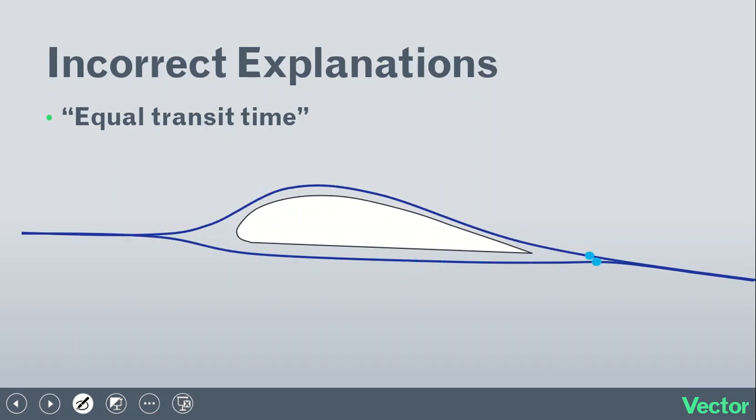But this is completely wrong. The air does not move faster over the upper surface because it has a greater distance to travel, because there's no reason that these air particles have to meet up at the end, and these air particles do not meet up at the end, in fact. So this is wrong, and it's easily disproven by looking at any wind tunnel test.